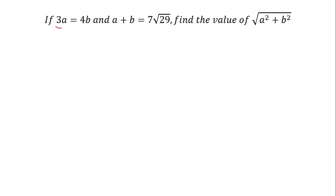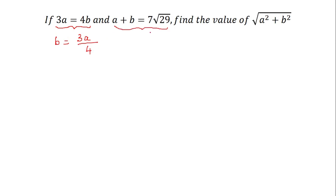We have 3a is equal to 4b. From this, I can write b is equal to 3a by 4. Now let us substitute b equals 3a by 4 into the second equation which is already given.